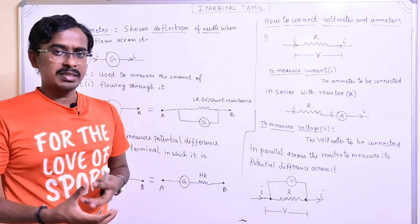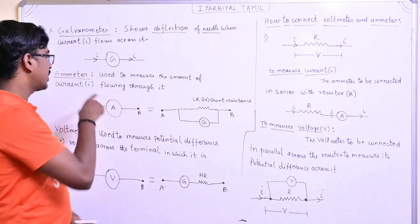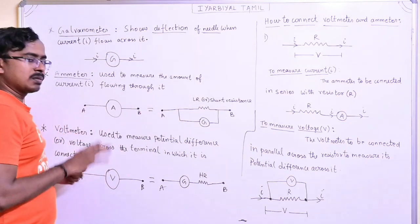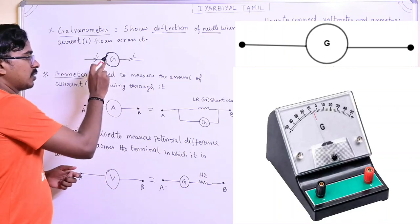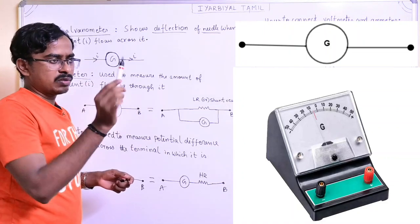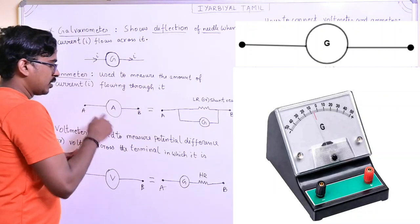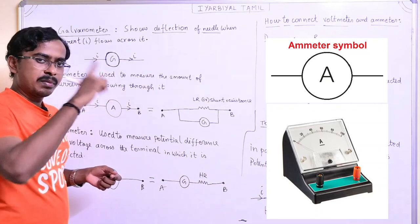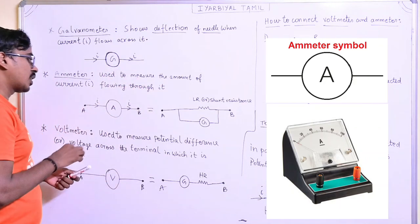The ammeter measures the amount of current - 1 A, 2 A, 3 A - it gives you the value. What device is the ammeter? Use it to measure the amount of current flowing through it. The galvanometer is a device - you can see it on the screen. If you have a needle, it will deflect. So if you look at the ammeter, this is an ammeter with a wire connected across it. The ammeter is basically used to measure the amount of current flow through it.